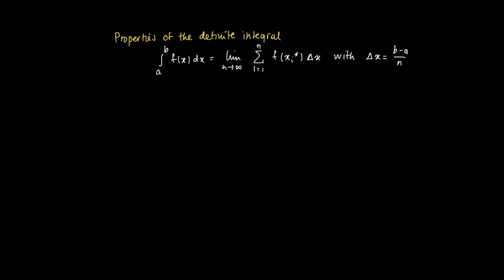Fortunately, the definite integral has numerous very nice properties so that we can use those in making calculations. For instance, the integral over a constant function over the interval a, b equals c times b minus a.